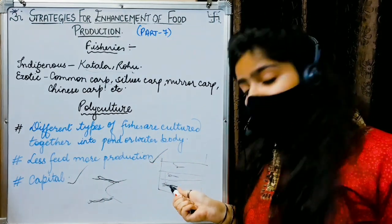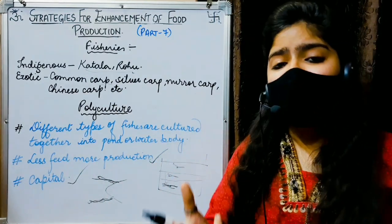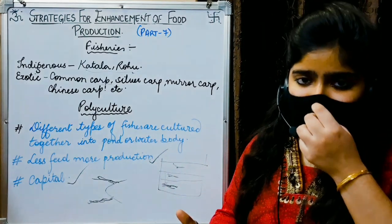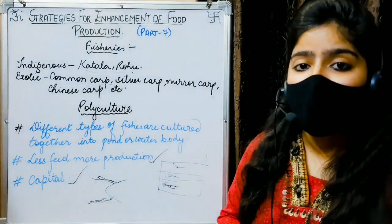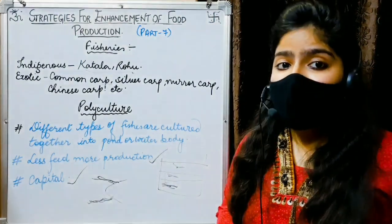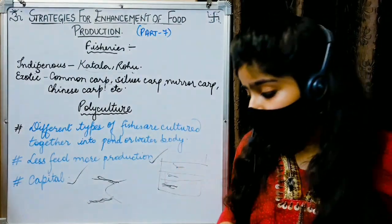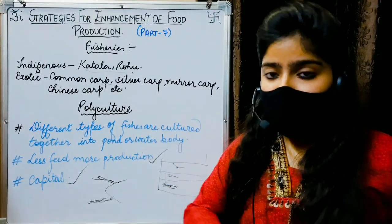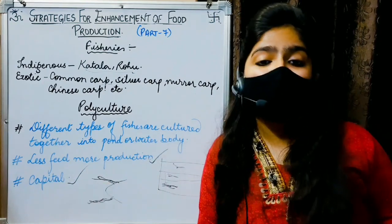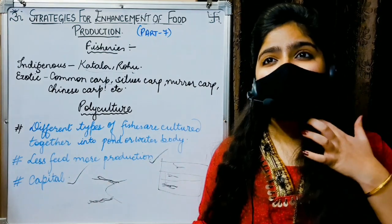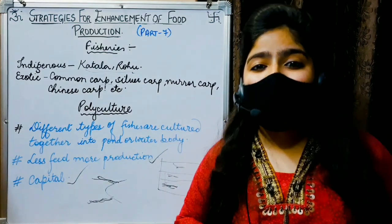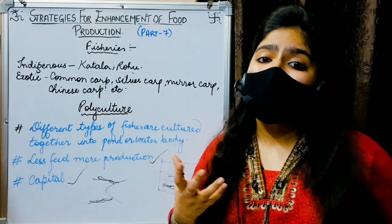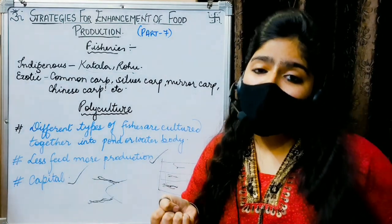So with polyculture, less feed is needed and more production is achieved. Fish have a lot of dietary variety but low food requirements, which means more production with less investment. Fish are the most easy animals to domesticate because their food requirements are less.